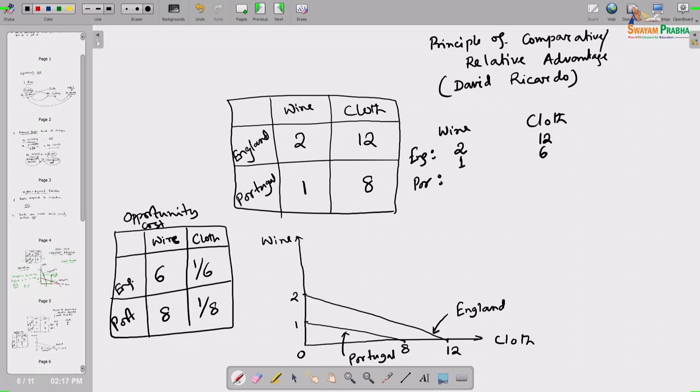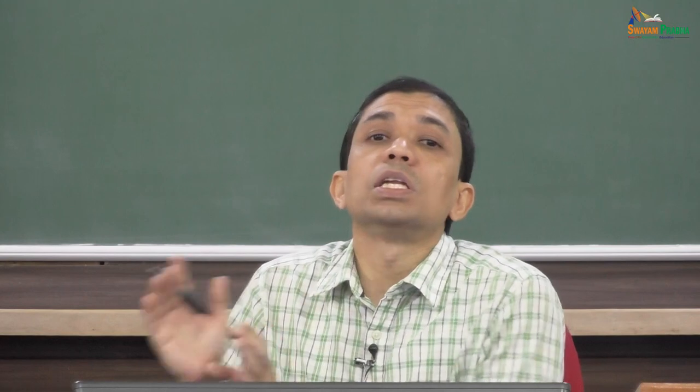Specialization means producing only that commodity. Since England's wine production opportunity cost is less than Portugal's wine production opportunity cost, England should specialize only in wine production. Exactly the same way, since cloth production's opportunity cost for Portugal is less than for England, Portugal should specialize in cloth production. They should engage in trade to make each of them better off.